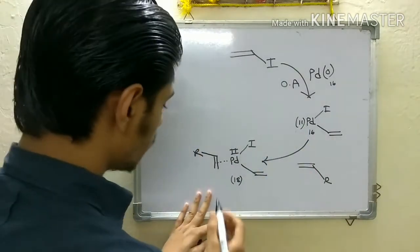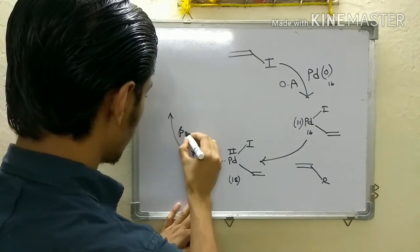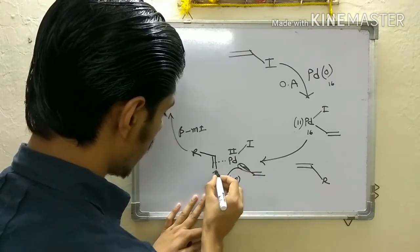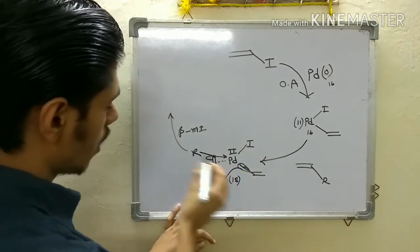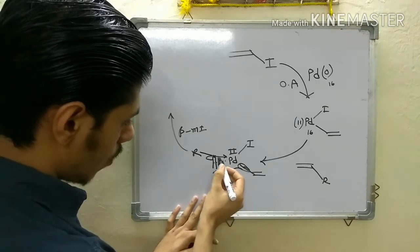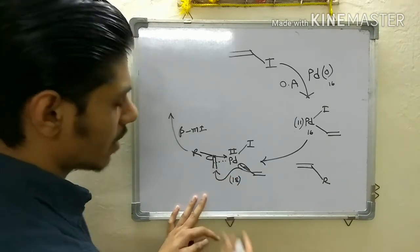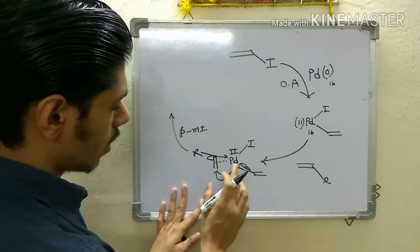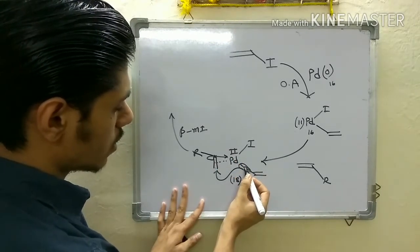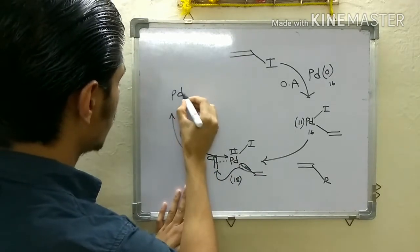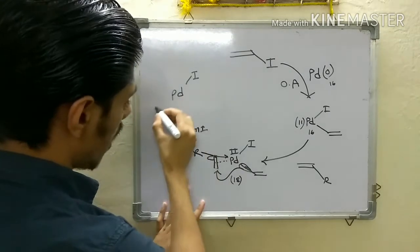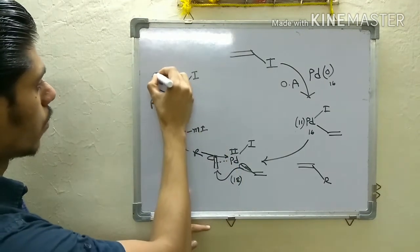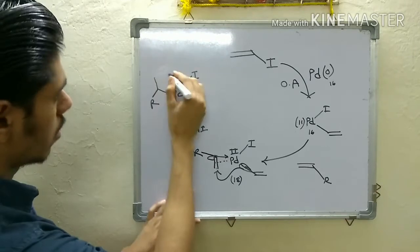The next step is beta migratory insertion. This group, with its electron pair, migrates here and a bond forms between palladium and this carbon. It may migrate onto one carbon or the other — this is dictated by steric factors. For simple discussion, let's suppose this bond migrates to this center. What you will get is this intermediate where the palladium is attached to this carbon center and the bond migrates here.